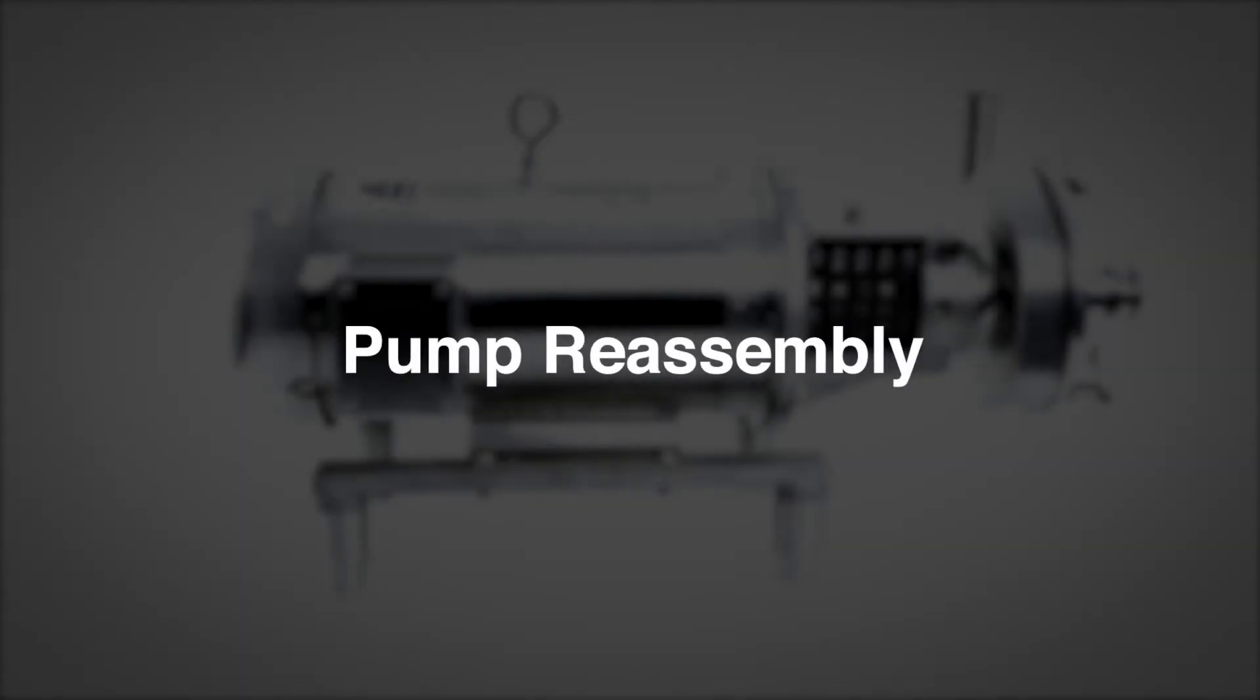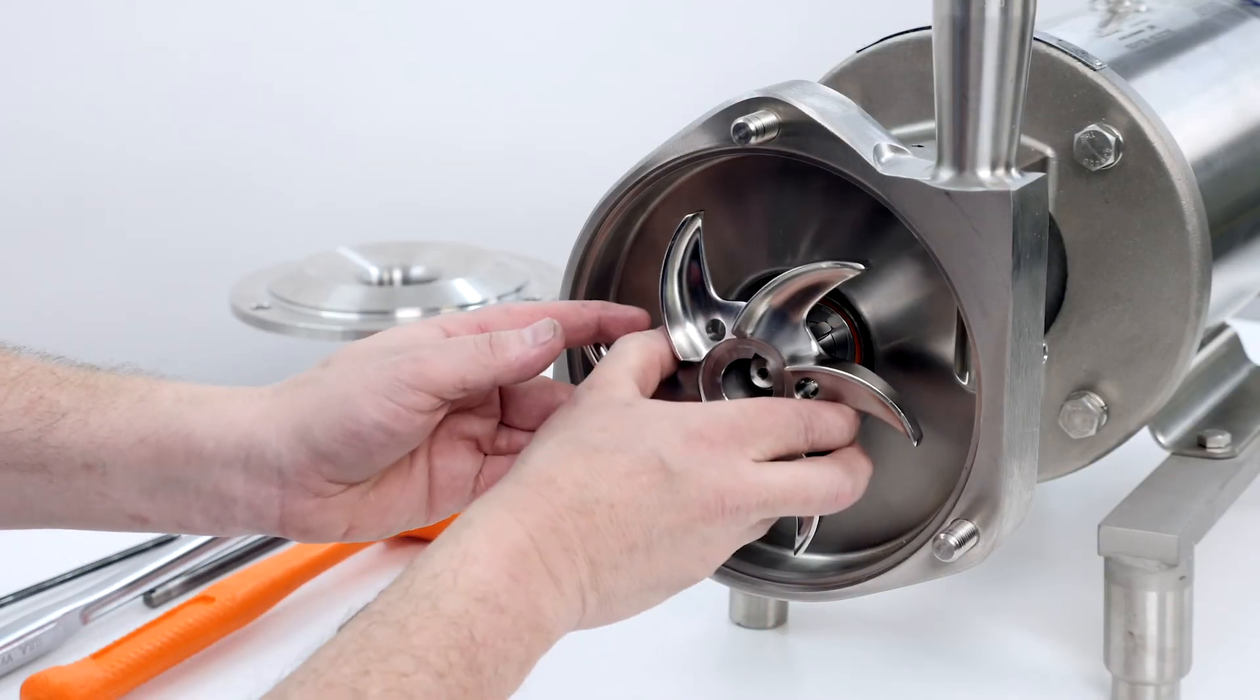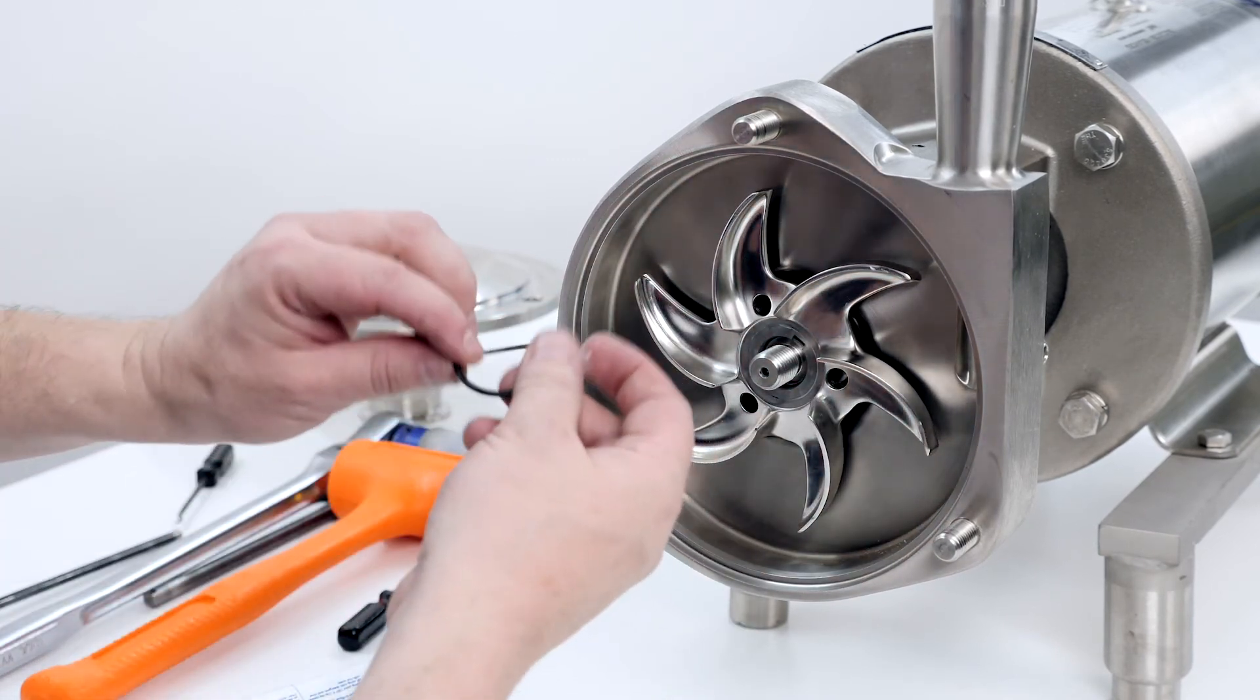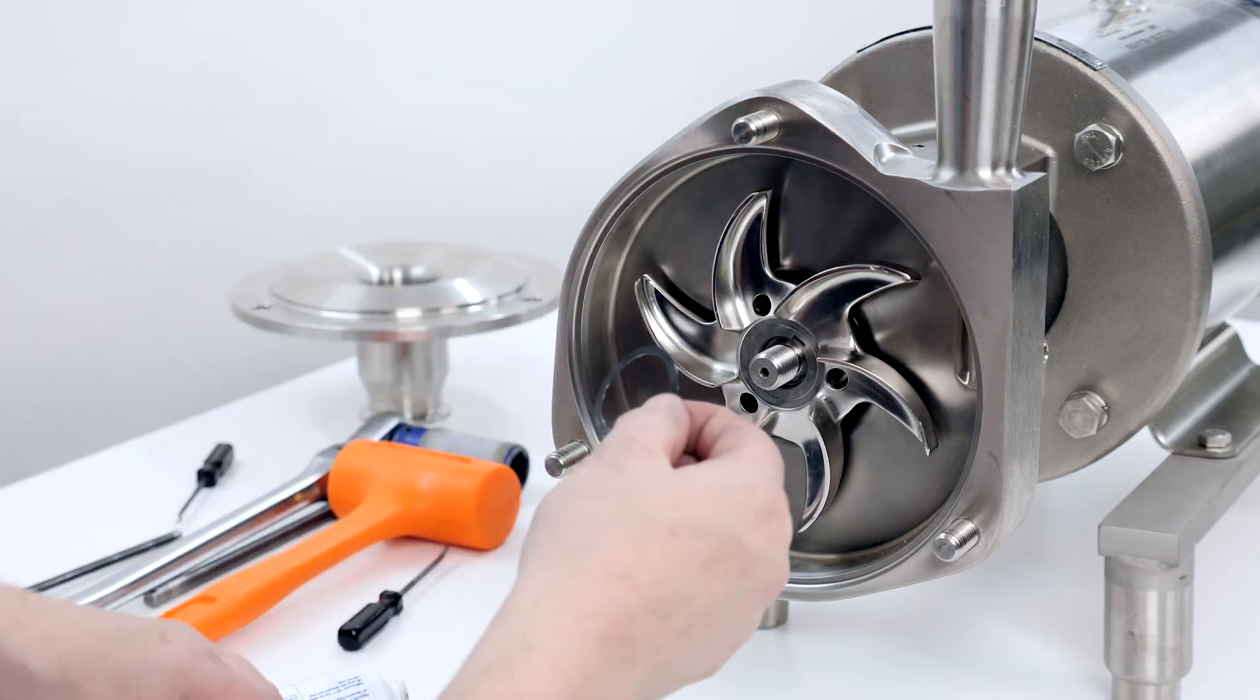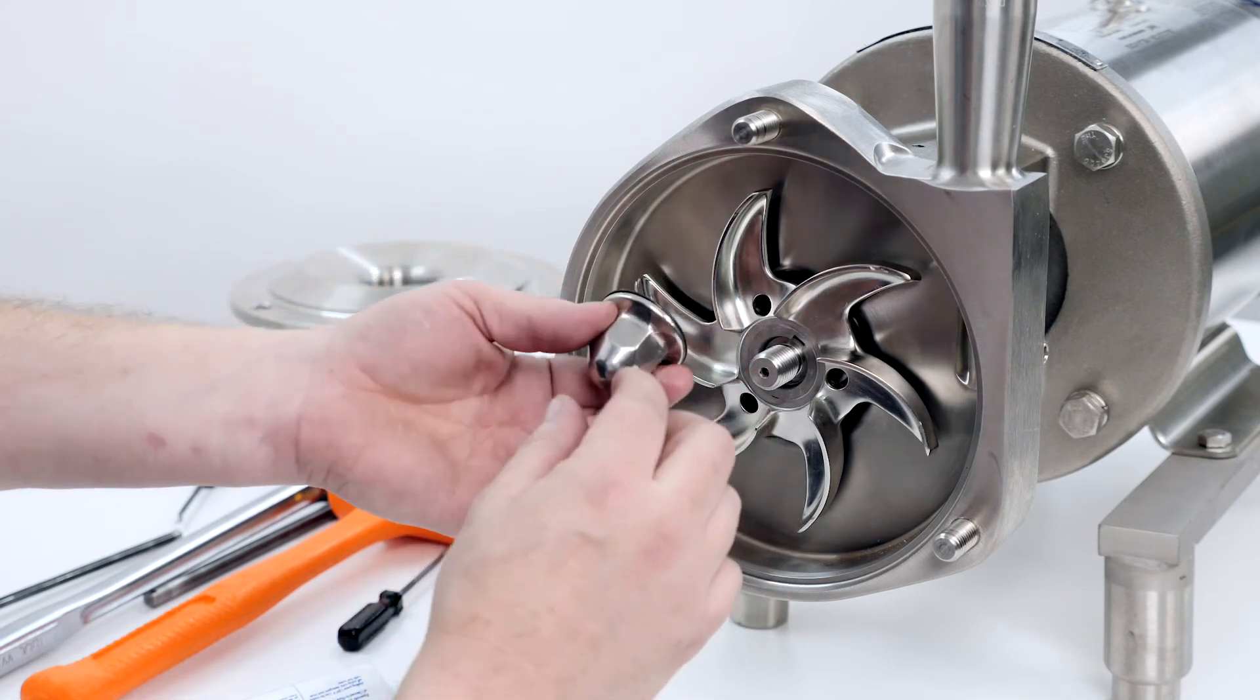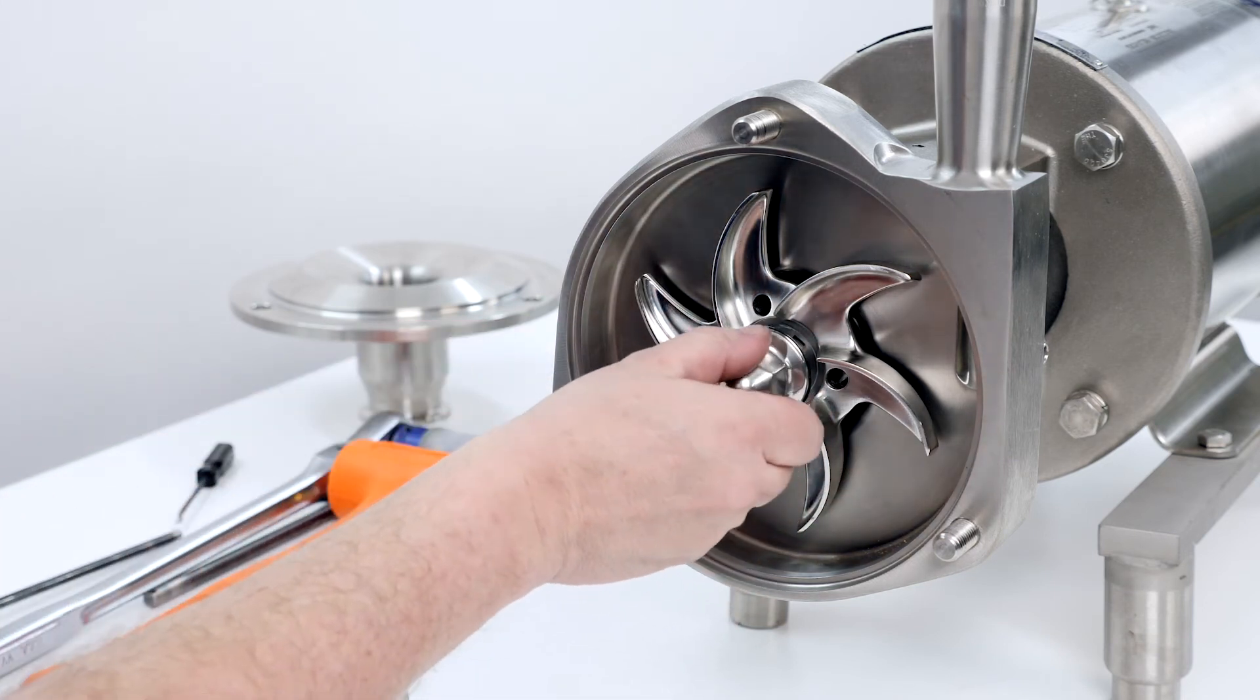Pump reassembly. Slide the impeller onto the shaft, making sure to align the keyway in the impeller with the key in the shaft. Lubricate the impeller nut gasket and place it onto the impeller nut. Thread the impeller nut onto the shaft.